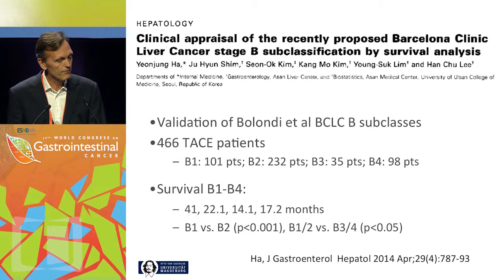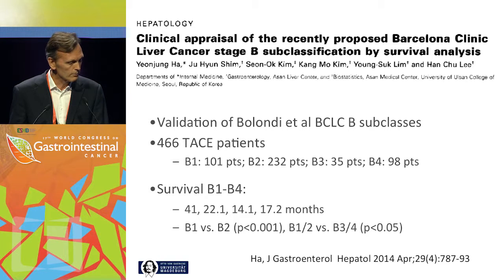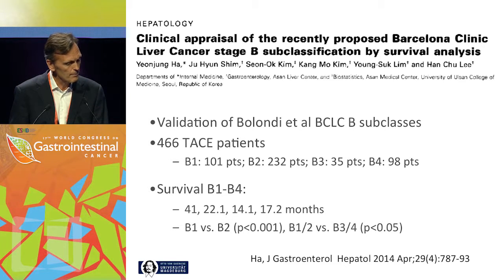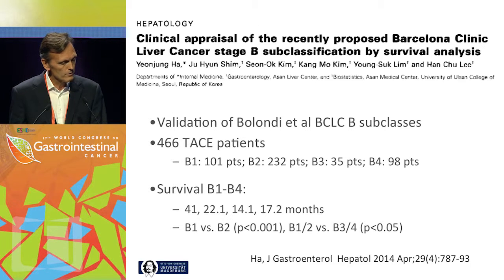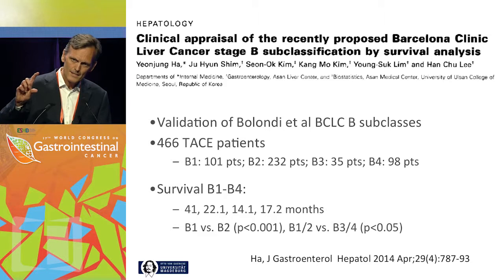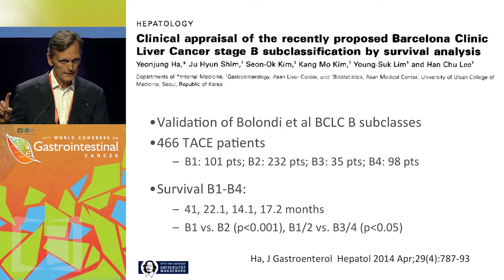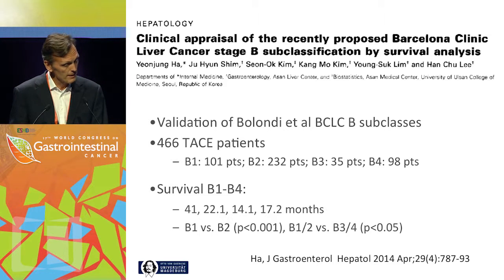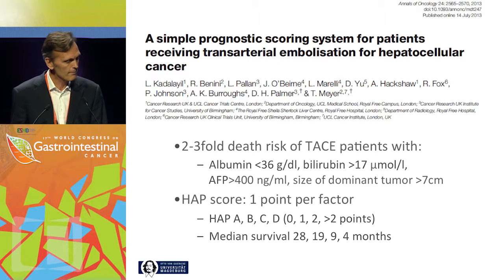It's a clinical appraisal of those proposed subclassifications in a Korean group of patients — 466 patients — with quite interesting outcomes. If you look at stages B1 to B4, it's 41, 22, 14, and 17 months respectively. The difference between 22 months (B2) and 14 months (B3) is Child A versus Child B — something to consider when selecting your patients. This is a proposal for subclassification.